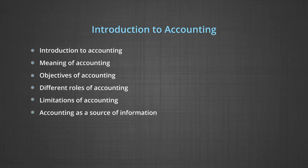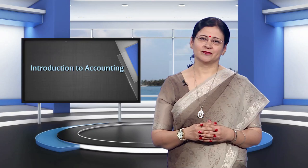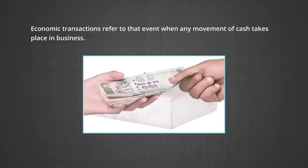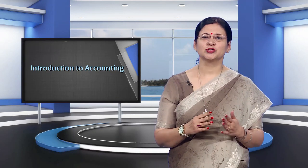We will also discuss about accounting as a source of information. Accounting is a systematic presentation of economic transactions done by any business, and it helps in calculating profit or loss for any business. Economic transactions refer to that event when any movement of cash takes place in business. Whenever a businessman is buying or selling anything, he has to keep a proper record of it, and also he needs to know at the end of a period — which may be a day, a month, or a year — the exact amount of profit he earned or how much loss he suffered. So, for all these purposes and many more, a businessman needs to do accounting.